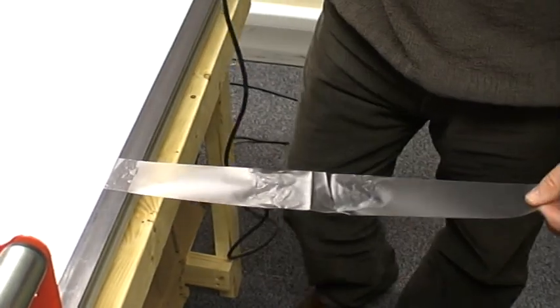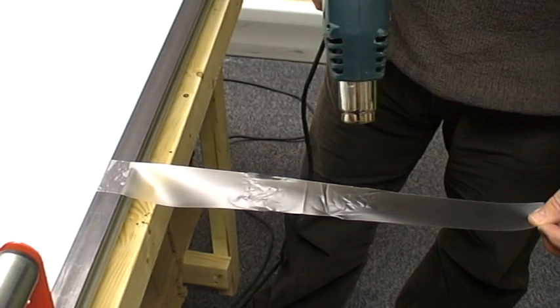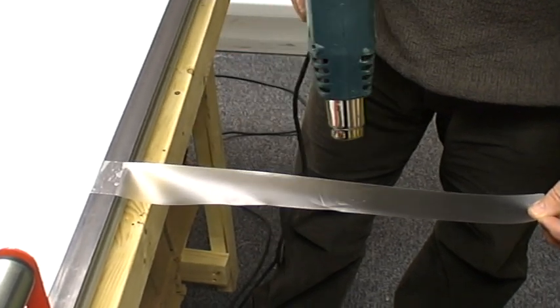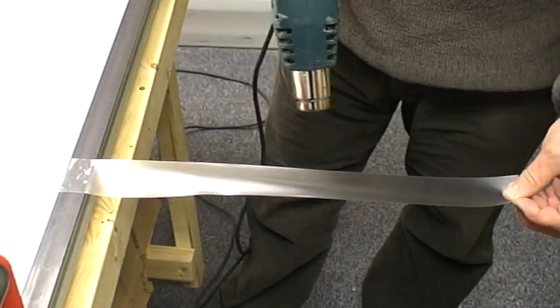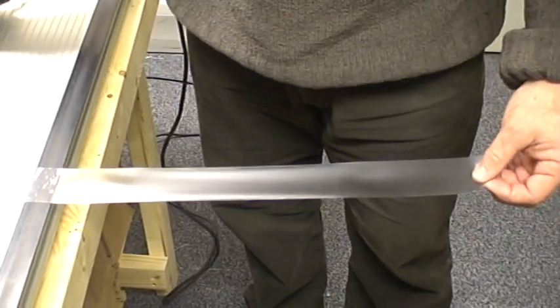I suggest you always have a heat gun when you're working with this tape. Apply a bit of heat to it and it's back to its original condition.